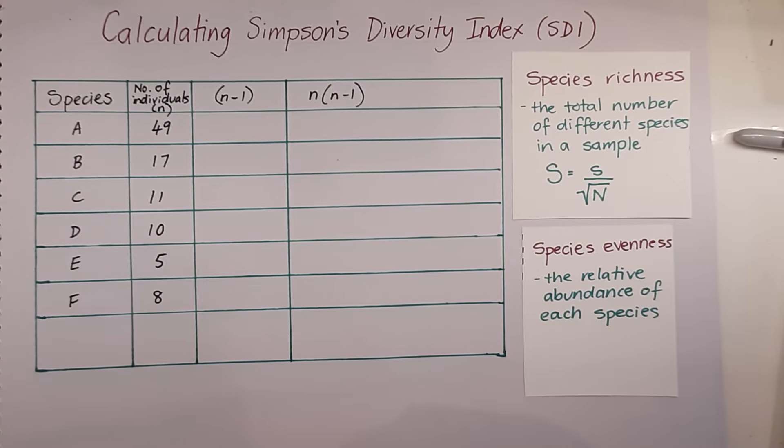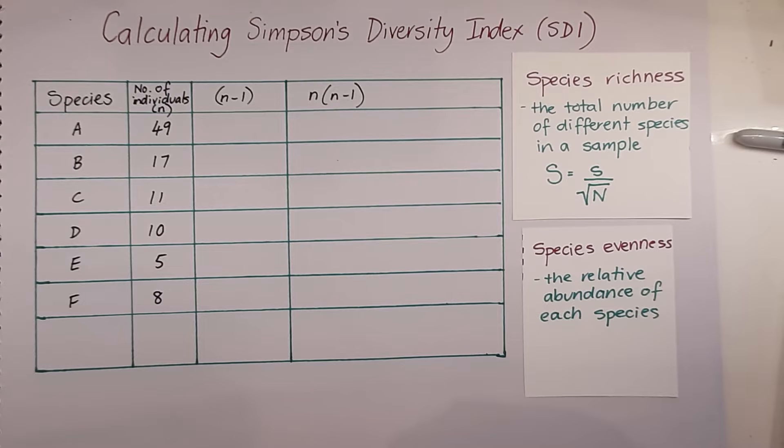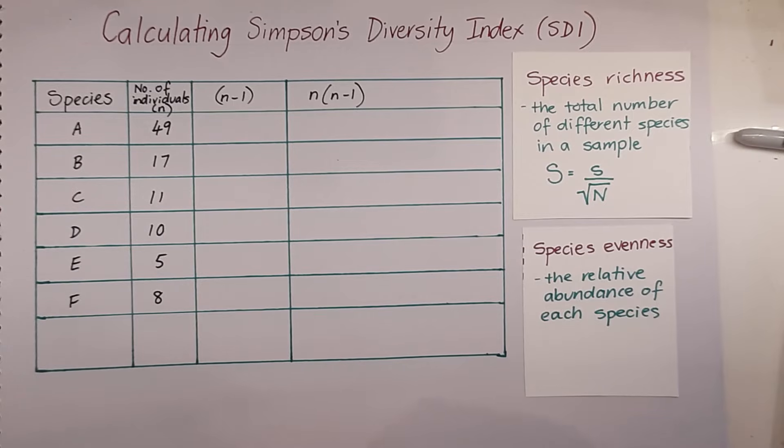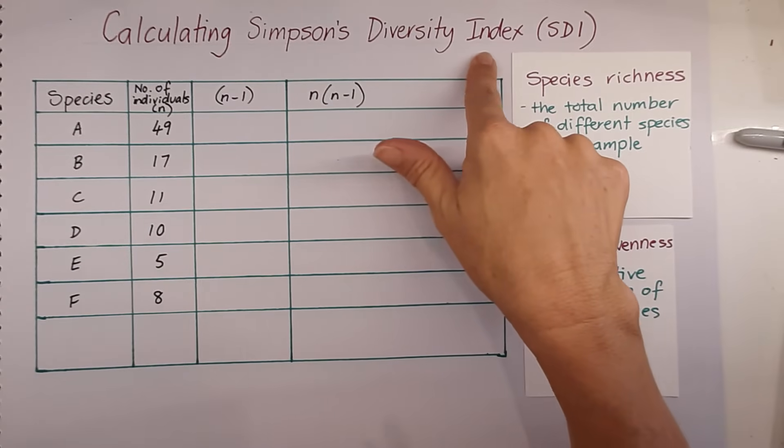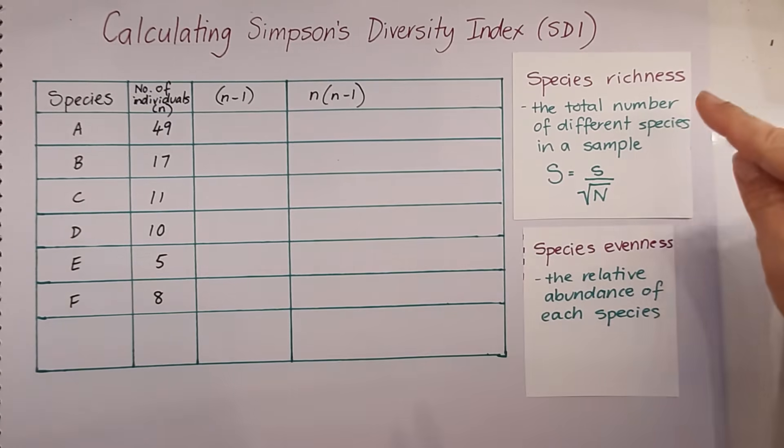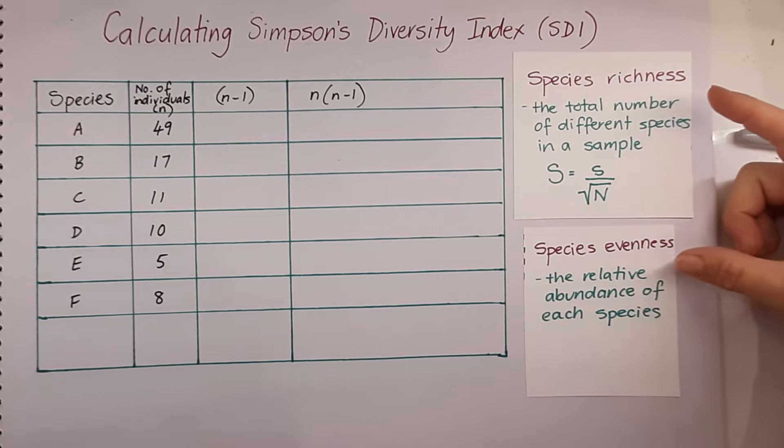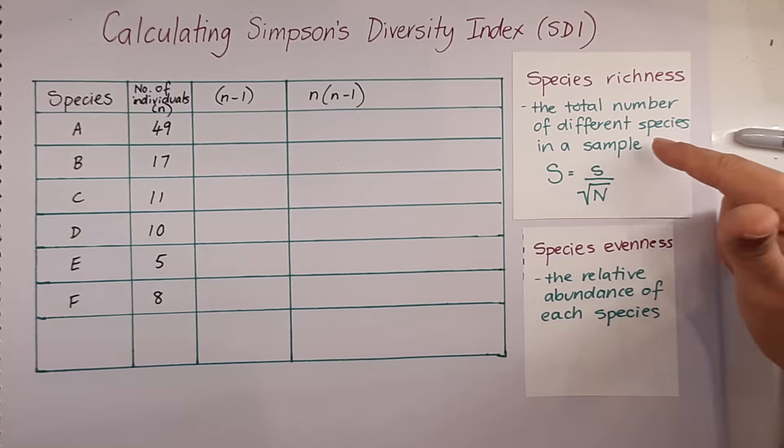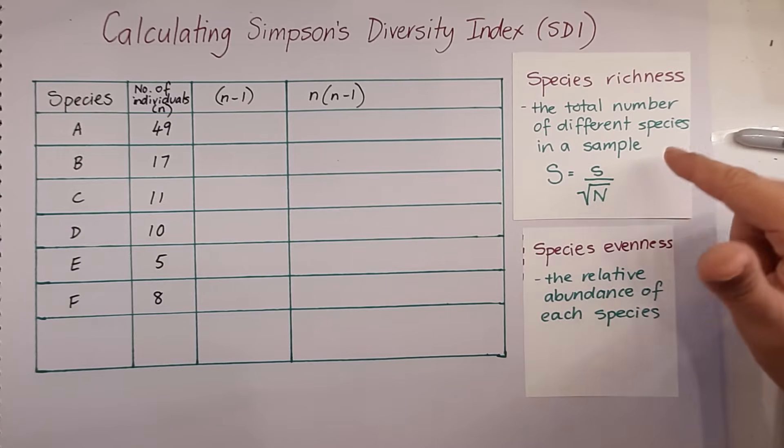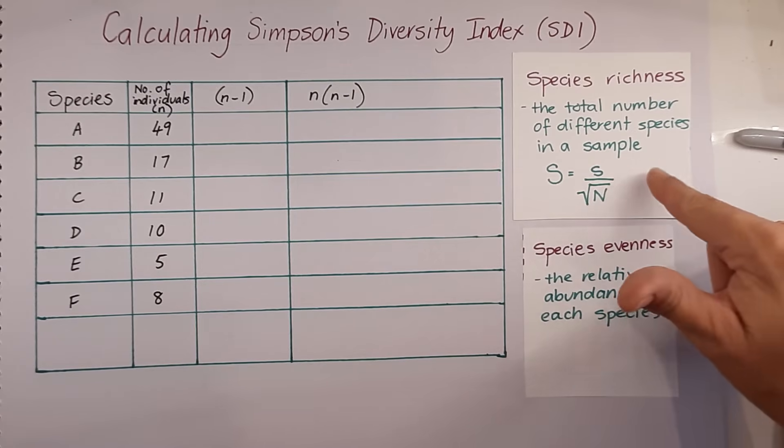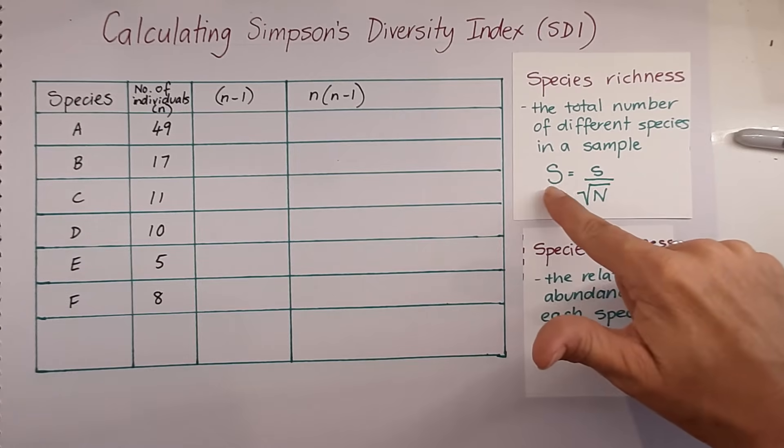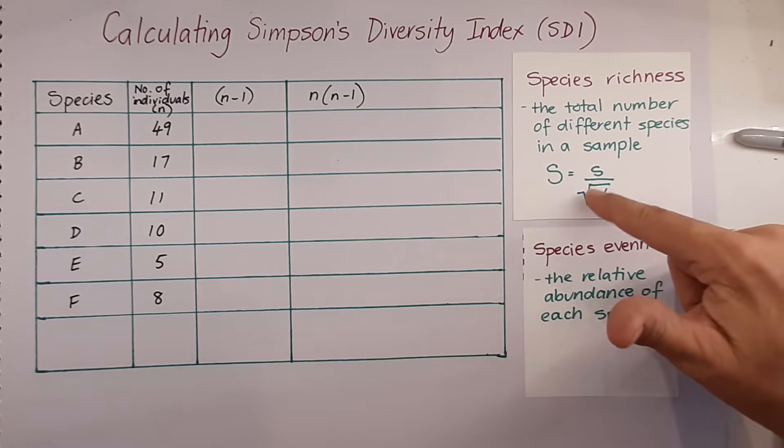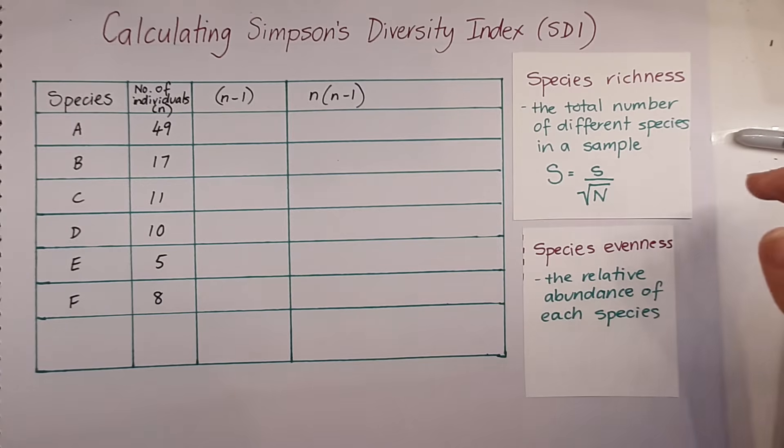In this video, we're going to go through how to calculate Simpson's diversity index. When we get a measure for SDI, it takes into account both species richness and species evenness. So species richness is the total number of different species that can be found in a sample. And we can use this formula to calculate species richness if the number of individuals in two areas is different.